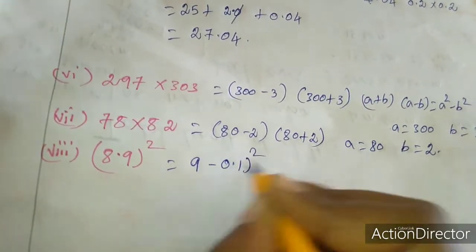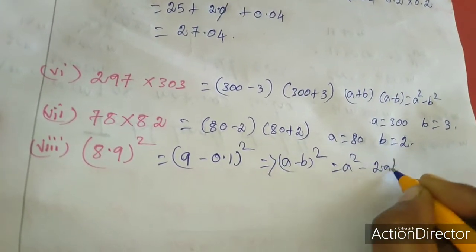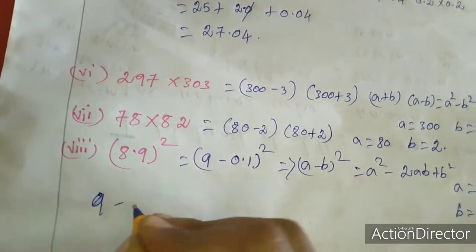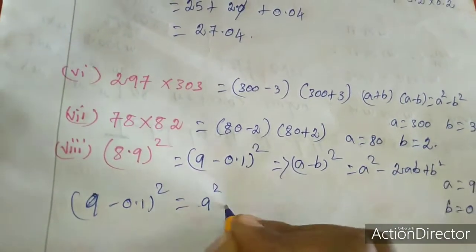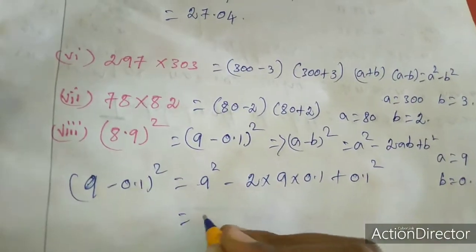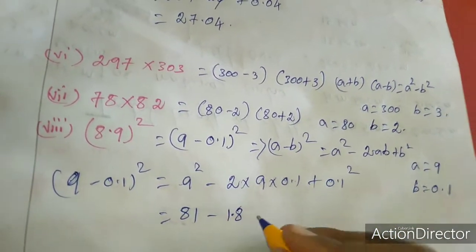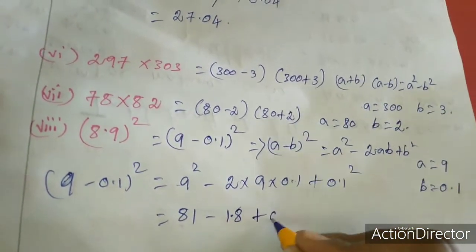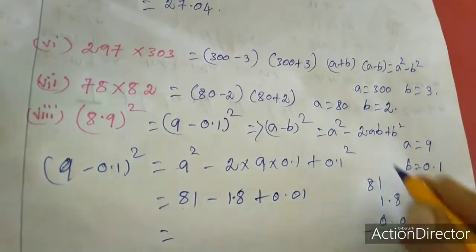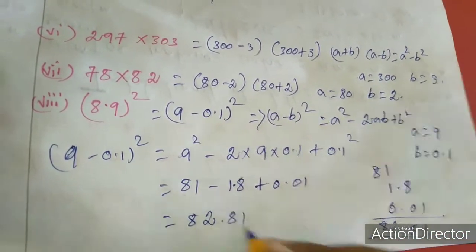Next, 9 minus 0.1 the whole square uses the a minus b whole square formula: a squared minus 2ab plus b squared. Here a value is 9 and b value is 0.1. So 9 minus 0.1 the whole square equals 9 squared minus 2 into 9 into 0.1 plus 0.1 squared. 9 squared is 81, minus 2 times 9 is 18, 18 into 0.1 is 1.8, plus 0.1 squared is 0.01. The answer works out to 81 minus 1.8 plus 0.01, giving 82.81 for this sum.